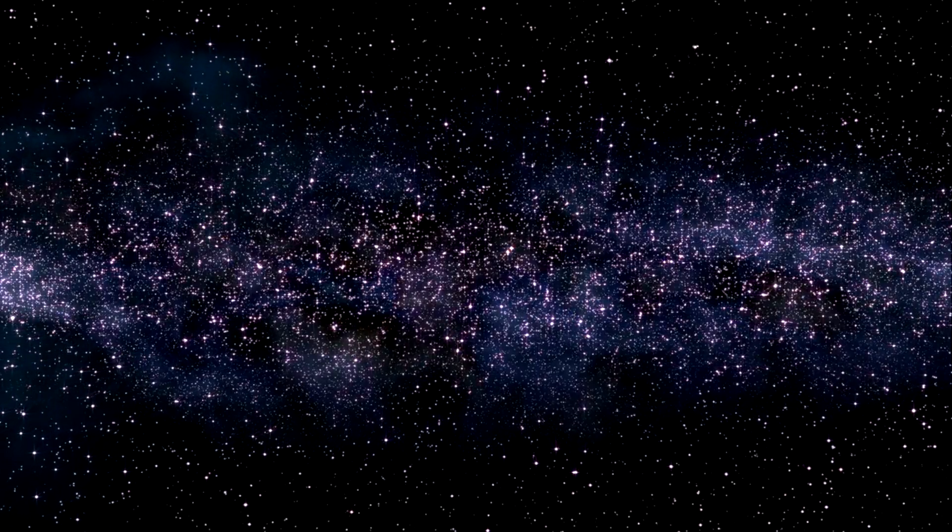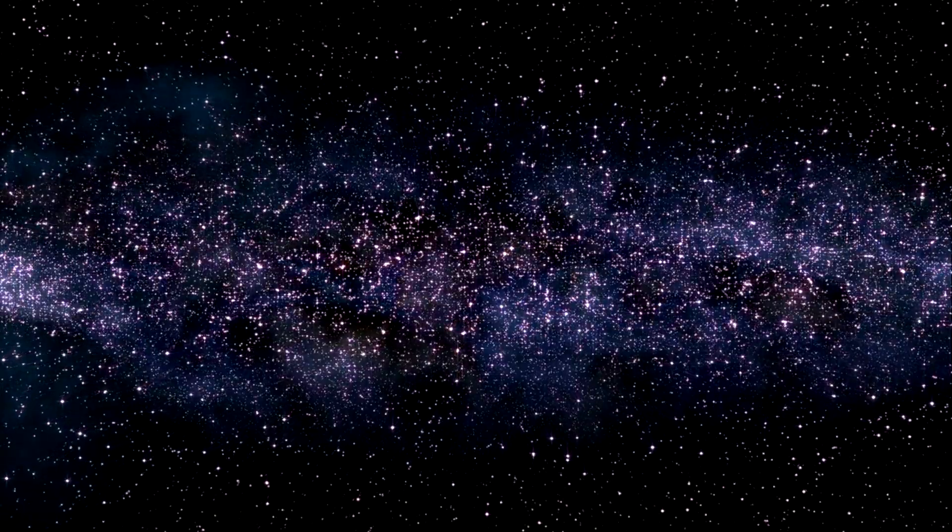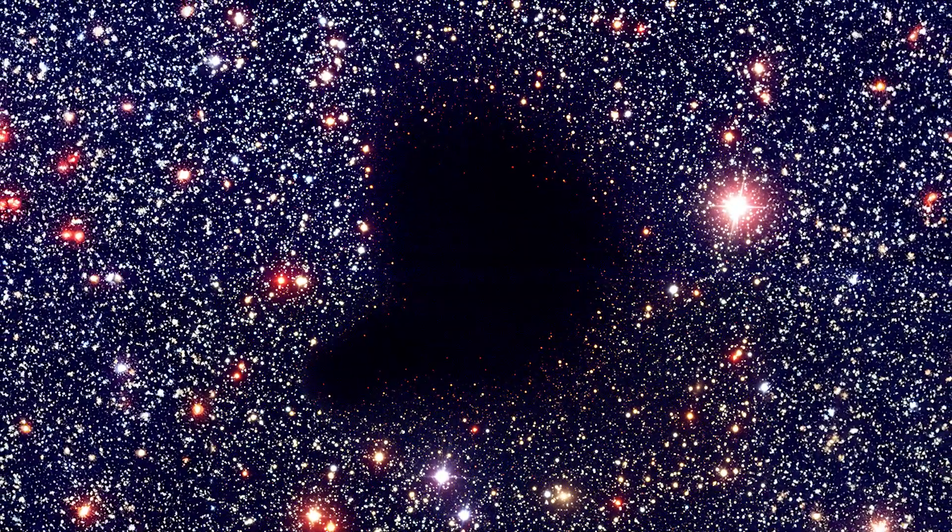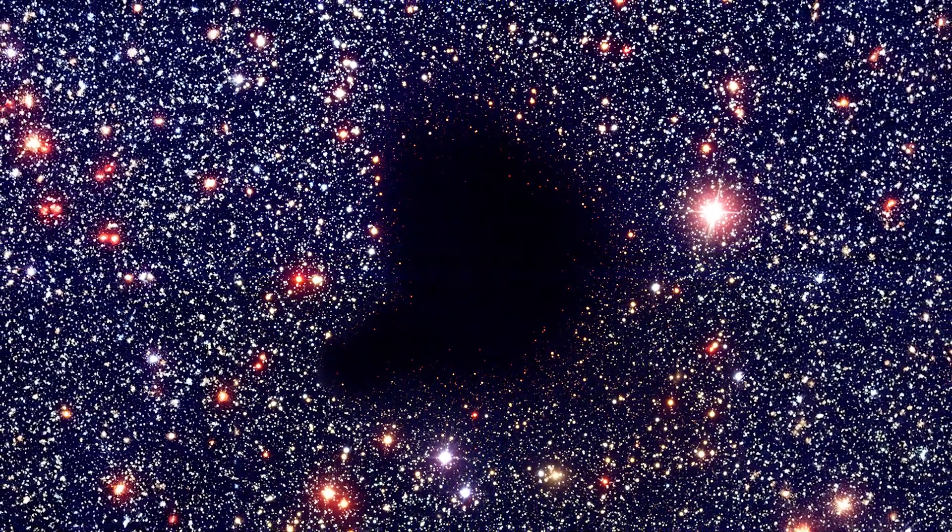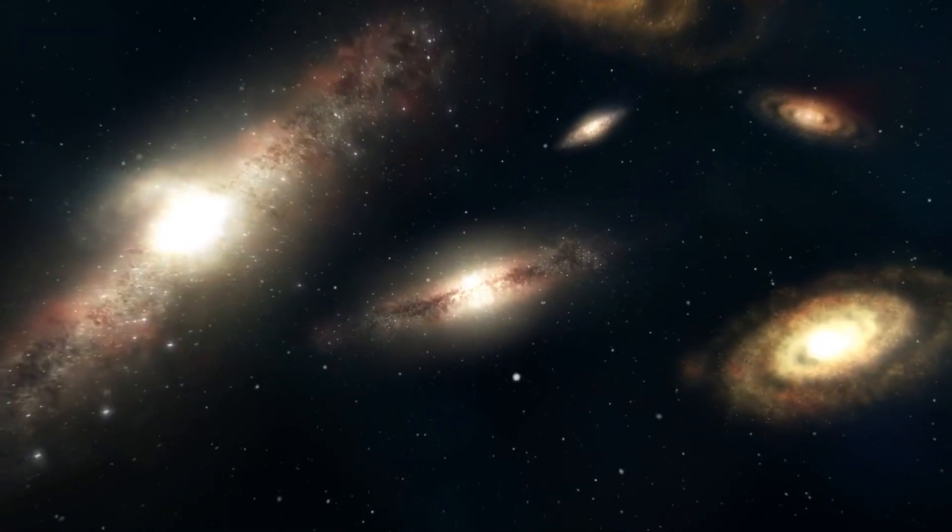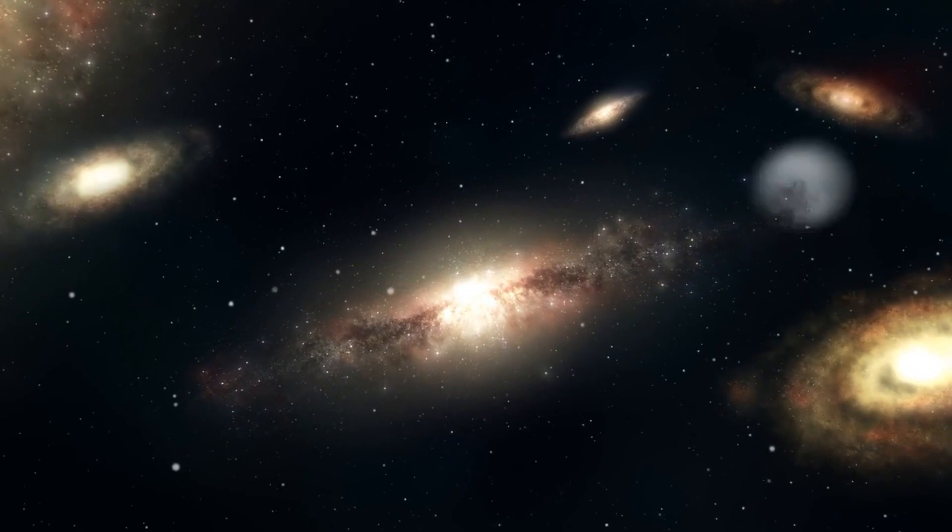They were scanning what they thought was a typical region of space in the Boötes constellation, but found an area of space that was completely barren. They expected to find galaxies after all, the universe is filled with them. But what they found was nothing, blackness, a region so vast that it should contain thousands upon thousands of galaxies. Yet, in this massive area of space, they found only 60.